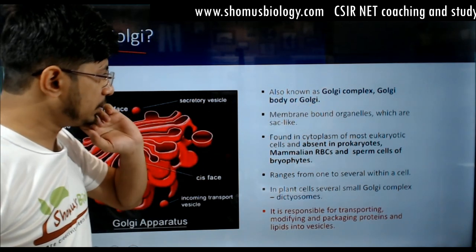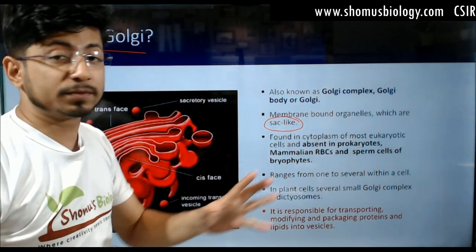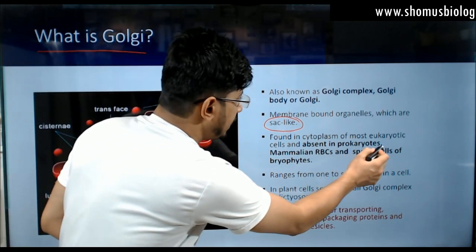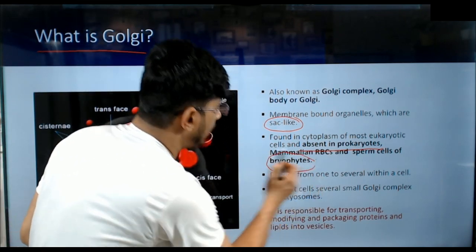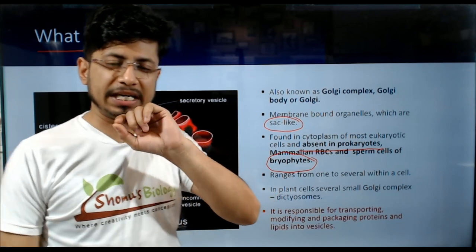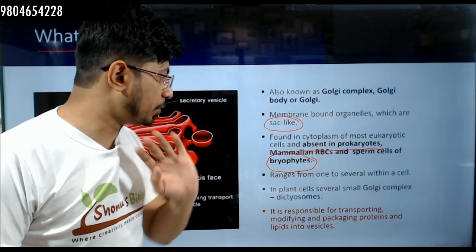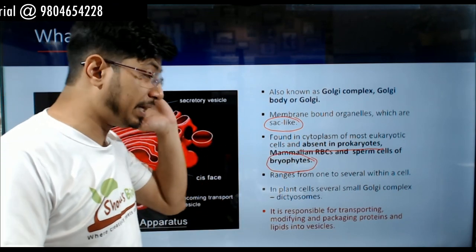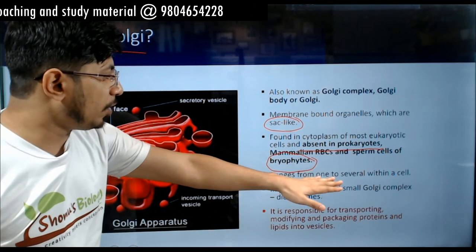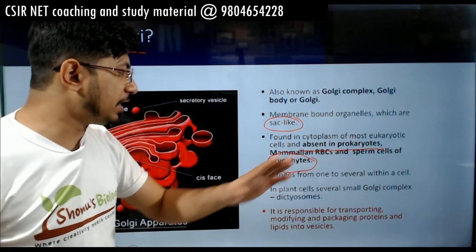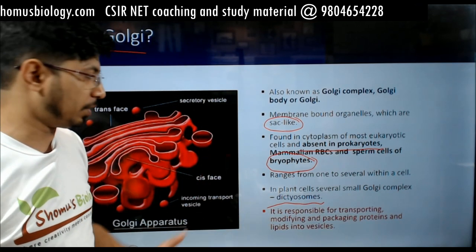Golgi apparatus, also known as Golgi complex or Golgi bodies, are membrane-bound organelles which are sac-like structures found in the cytoplasm of most eukaryotic cells, and absent in prokaryotic cells, mammalian RBCs, and sperm cells of bryophytes. It ranges from one to several within a cell. In plant cells, several small Golgi complexes together are known as dichotosomes, where multiple Golgi bodies are found together.